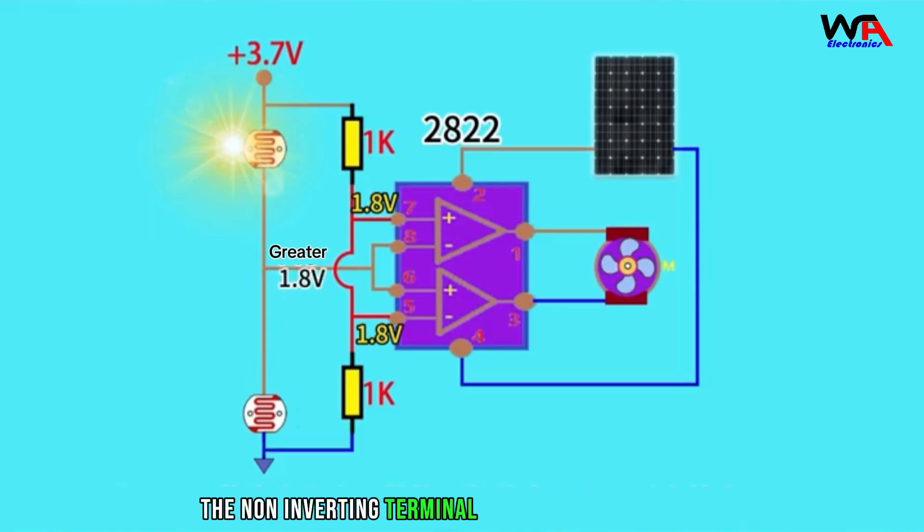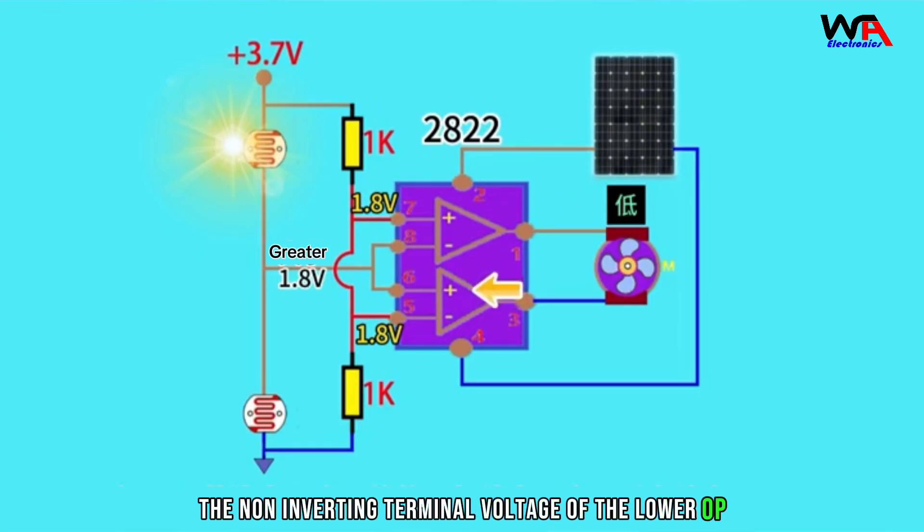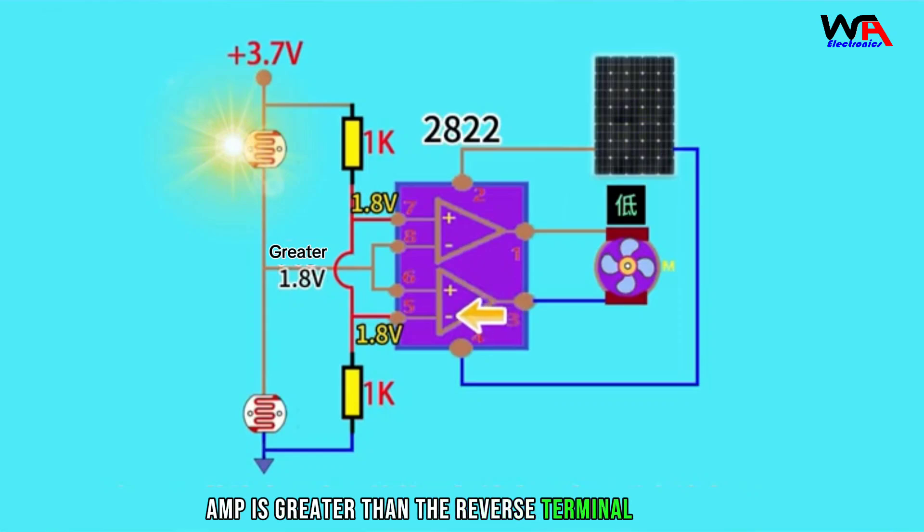Therefore, the non-inverting terminal voltage of the upper op-amp in the 2822 chip is smaller than the reverse terminal voltage. In this way, pin 1 outputs low level. In the 2822 chip, the non-inverting terminal voltage of the lower op-amp is greater than the reverse terminal voltage. In this way, pin 3 outputs high level.